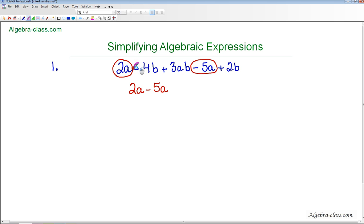Now as I take a look at the 4b, I also notice that I have 2b, and since they have the same variable, they too are like terms. Notice that I took the sign in front, so I put minus 4b, and then plus 2b.